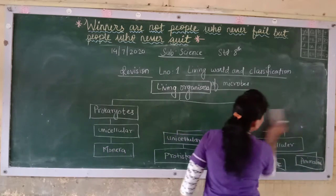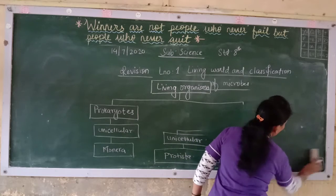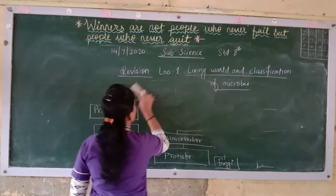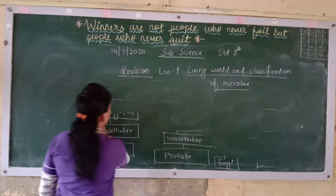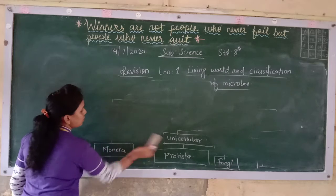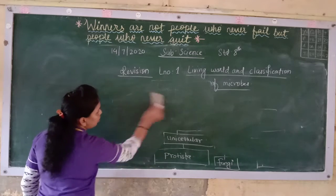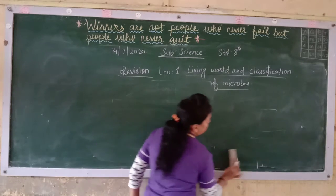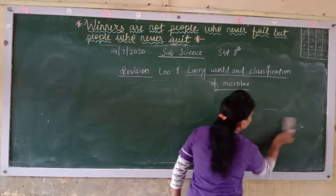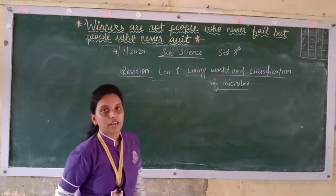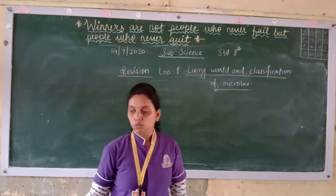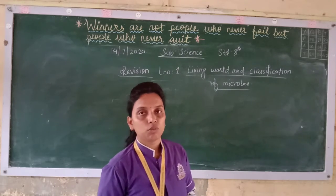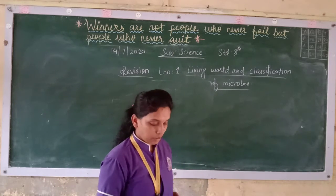So this way you classify into prokaryotes — unicellular, then multicellular — and eukaryotes are further divided into unicellular, multicellular, and both. They are divided into the five kingdoms.